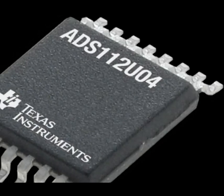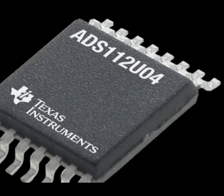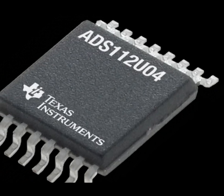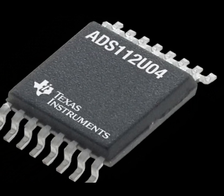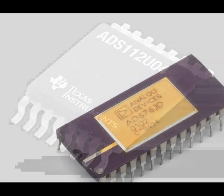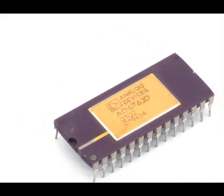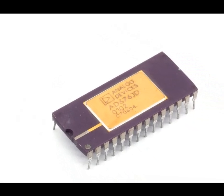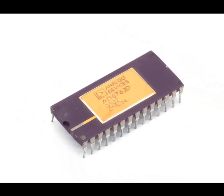An analog-to-digital converter, or ADC, is a crucial component in electronic systems that allows the conversion of continuous analog signals into discrete digital values. This conversion is necessary because many modern electronic systems, such as computers and microcontrollers, operate primarily with digital signals.